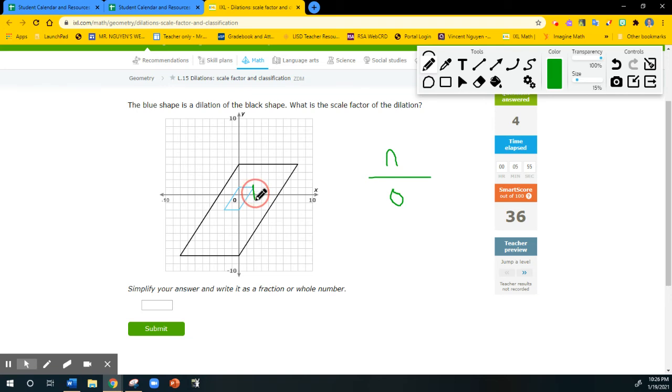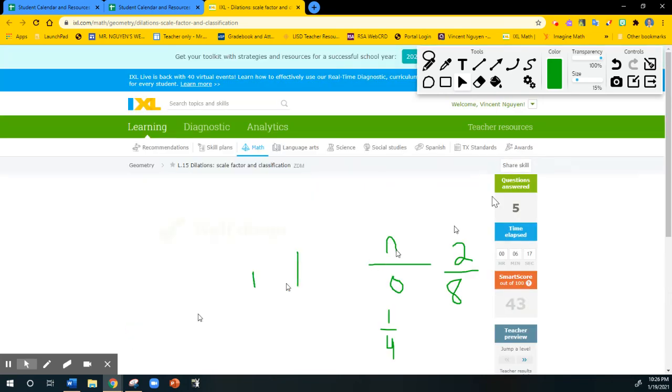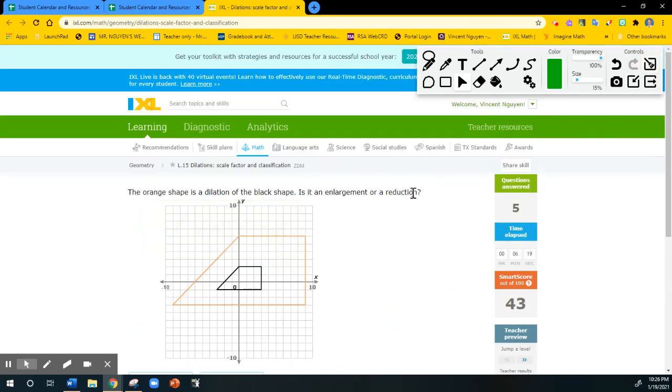So I'm going to use the X coordinate, which is 2, over the Y coordinate, which is right here. That is 8. So 2 over 8 can be simplified down to 1 over 4. So the scale factor here is 1 divided by 4. 1 over 4, we got smaller 4 times. There we go.